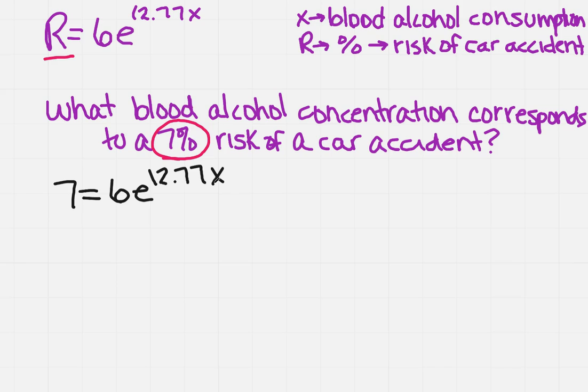Now in order to solve this we know that we have to get the e term all by itself. So I'm going to divide both sides by 6. The 6's are going to cancel on the right, I'm left with 7 over 6 equals e to the 12.77x.